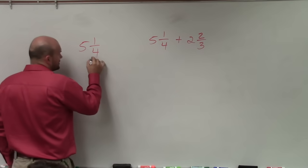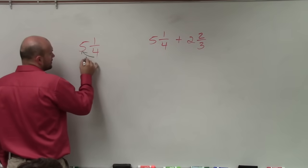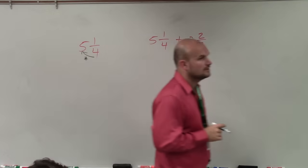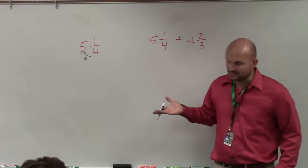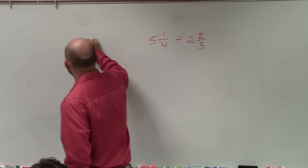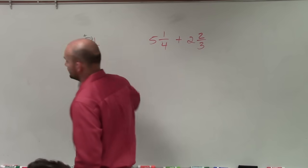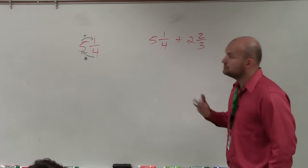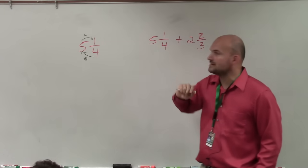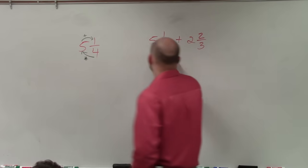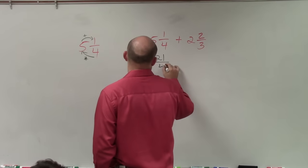So to do that, what you're simply going to do is take the denominator and multiply it by your whole value. So 4 times 5 is 20. Then you're going to add that sum, or that product, to your numerator. And when you do that, you're still going to leave it over 4. So 4 times 5 is 20, plus 1 is 21, over 4.